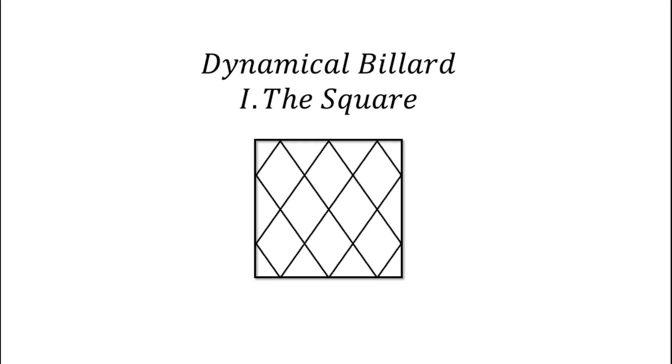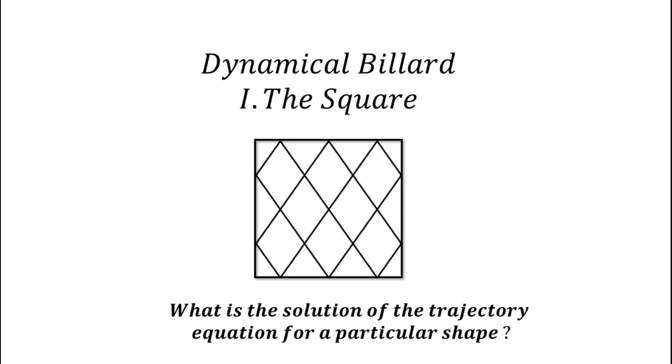We will start with the simplest case, the square, and each time we will try to answer this question with no guarantee: what is the solution for the trajectory equation for this particular shape. Such a solution contains all the information of the problem and is very valuable.